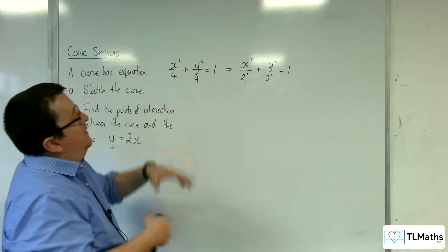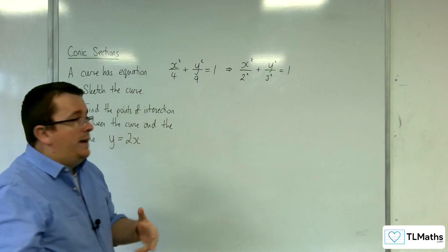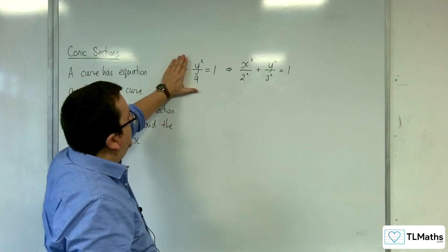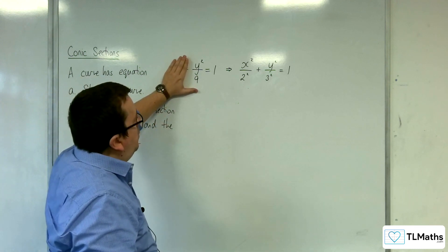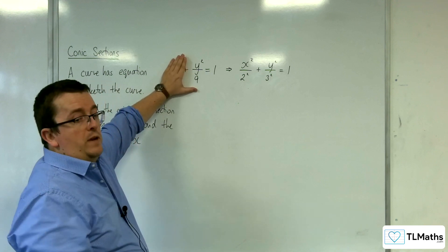Where it crosses the y-axis is when x is 0. And so you solve that equation and you get y squared equals 9, so y is plus or minus 3.